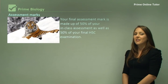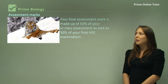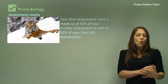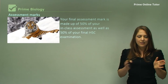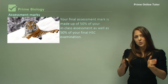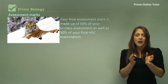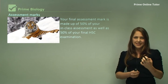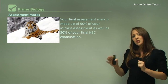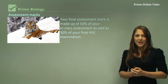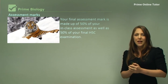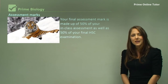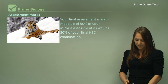So how is your assessment mark made up? Your final assessment mark is made up of all of your assessments during the year, adding up to 100%. We take 50% of your total in-class assessment marks, then when you do your HSC examination we take 50% of that mark, and putting those two marks together becomes your final HSC mark.